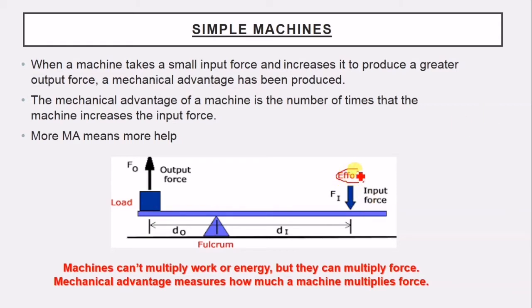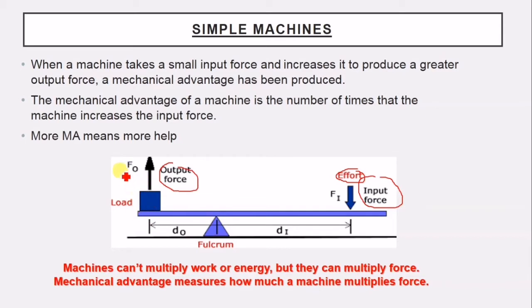The force exerted by you on the machine is called the input force. You exert an input force here, and in turn the machine exerts an output force on the load. You exert input force on the machine, the machine takes this input force and actually increases it — we exerted a small input force, and the machine exerts by its turn a large output force.